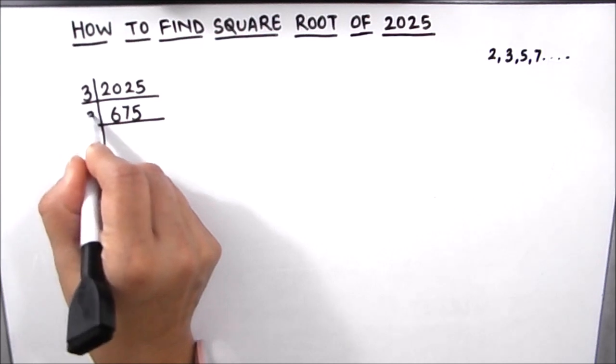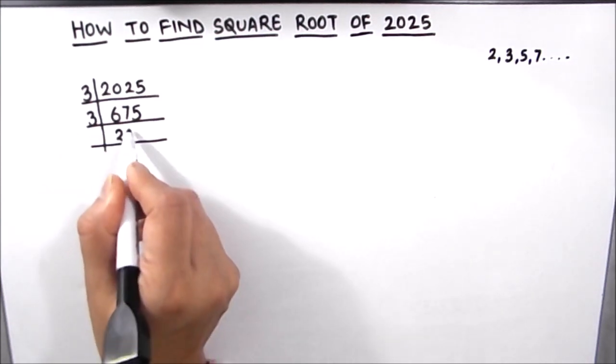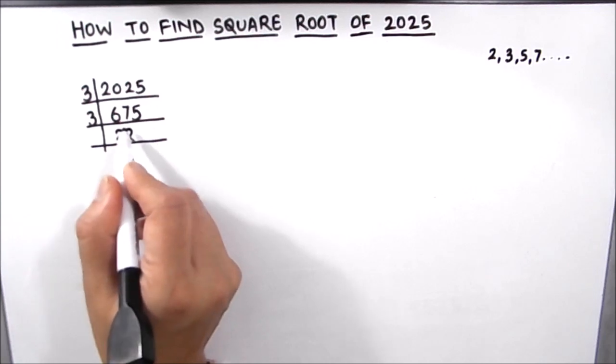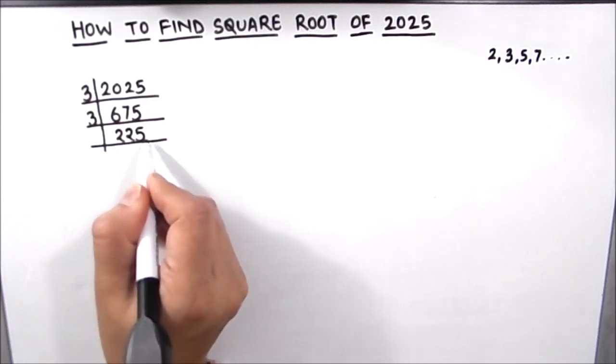Again we can use 3. 3 times 2 is 6, 1 will be remainder, then we'll drop down 5, that becomes 15, so 3 times 5 is 15.